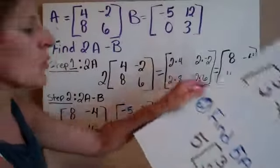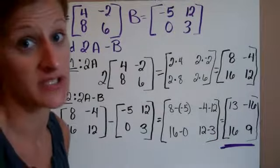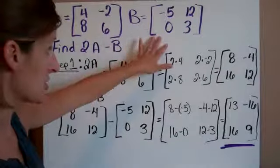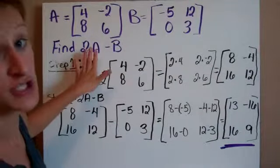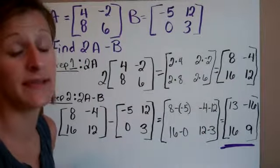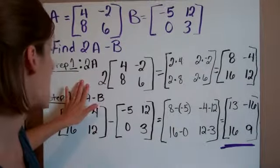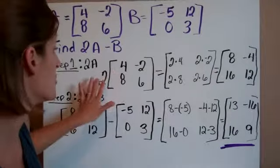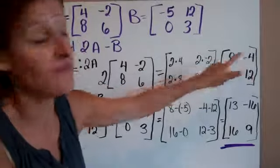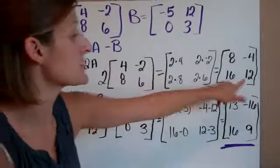You'll also get into some where they ask you to do multiple operations with matrices. So here is my A and here is my B, they are 2 by 2 matrix. I want to find 2 times A, then subtract matrix B. The first step I need to do is 2 times the matrix A. So I do 2 times 4, which is 8. 2 times negative 2, which is negative 4. 2 times 8, which is 16. And 2 times 6, which is 12. So this is my new matrix that I am using now.